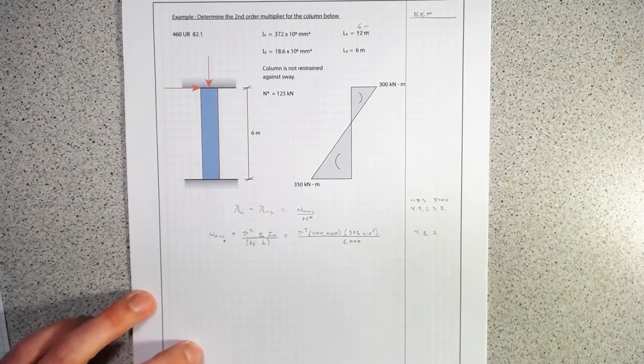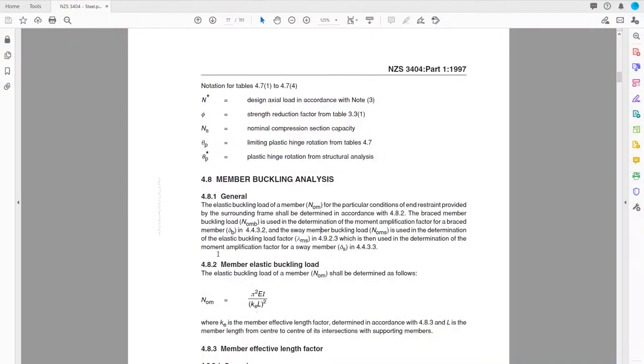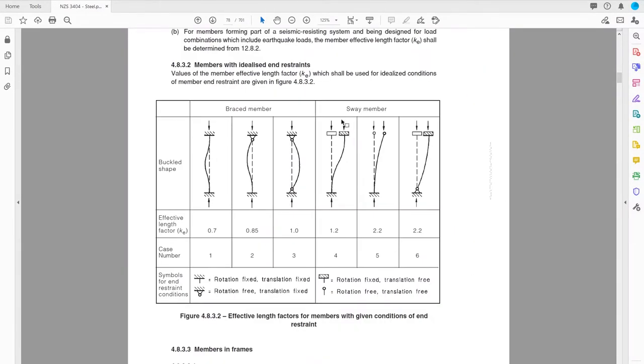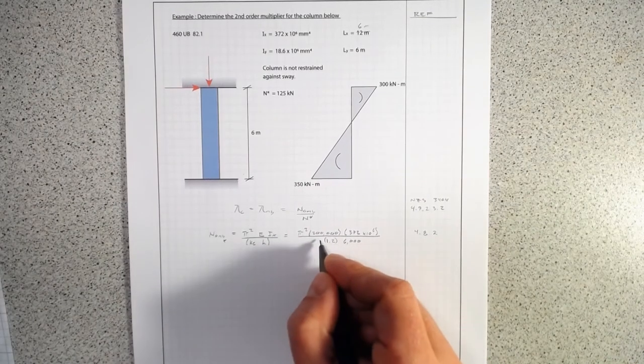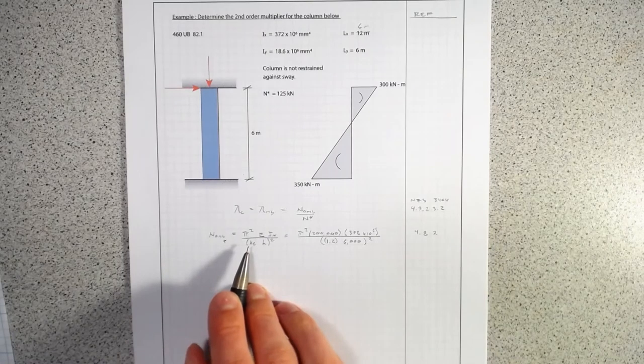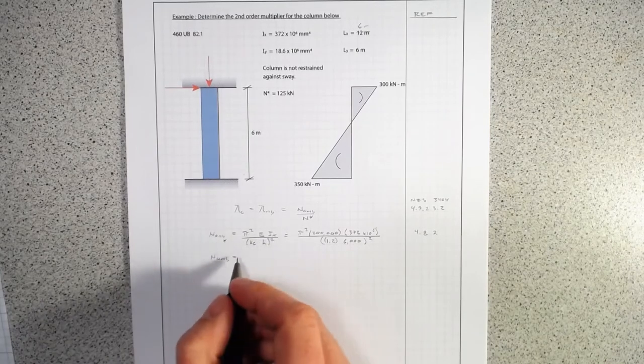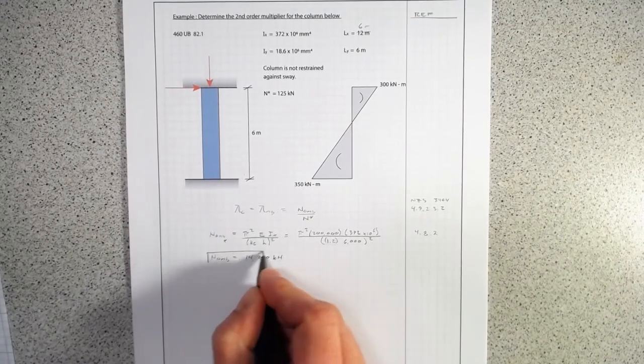Our ke factor, in order to find that, we need to go to our standard here at page 4.8. We have a sway system like this where we're fixed at both ends but we can still sway. So we have a ke factor equal to 1.2. That whole thing is squared on the bottom. If we do that, we work out that our nominal buckling load for the column about the x-axis is going to be 14,200 kilonewtons.